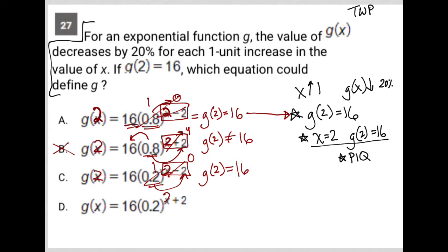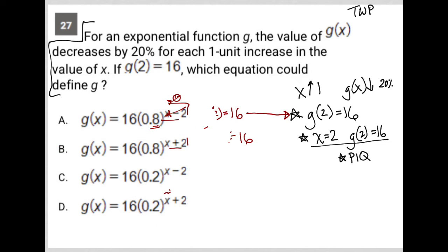And then lastly, I think we'll end up with a similar situation that we had in choice B because this is 4 and 0.2 to the fourth power and still multiplied by 16 will not still equal 16. So it's not equal to 16. So I'm going to erase this just so we can clean this up a bit, knowing that choice A and C both gave me g(2) equals 16.